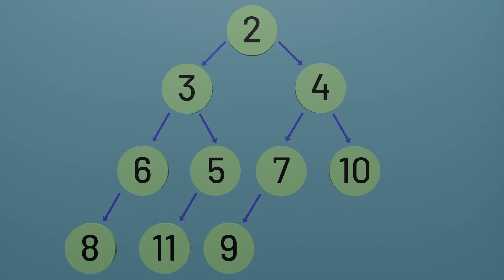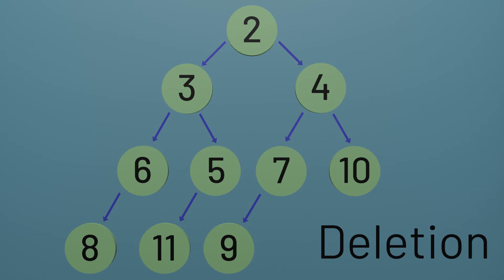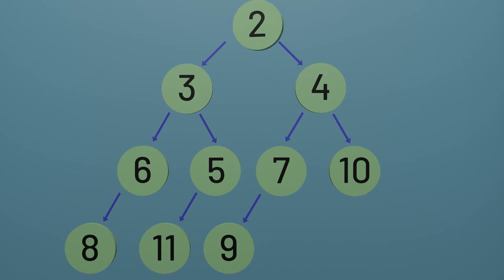We now have the ability to add a node to the heap. The other action we'll want to perform is deleting a node from the binary heap. Because the binary heap is designed to give us access to the minimum element, that's the only one we're allowed to delete. But once we remove that node from the heap, we're left with a heap that isn't in the correct shape anymore — in particular, it's missing a root node.